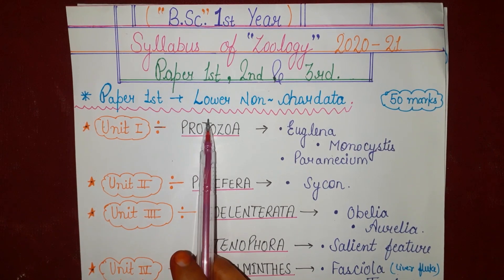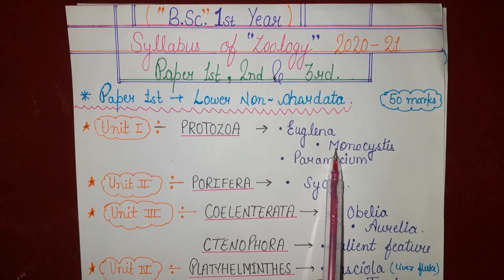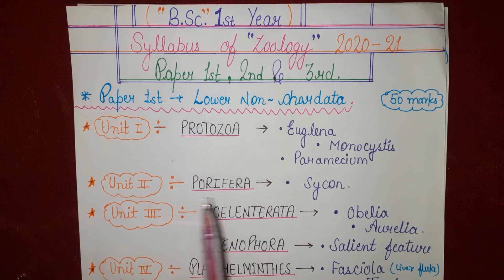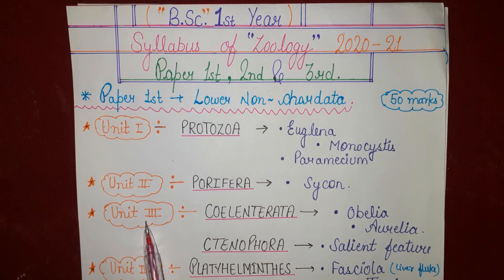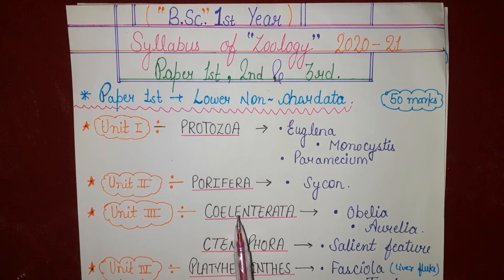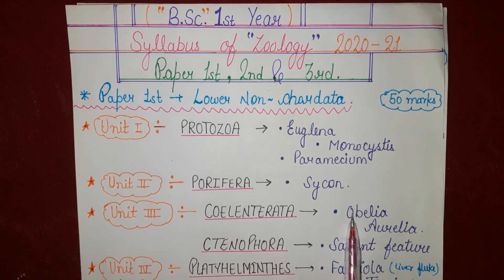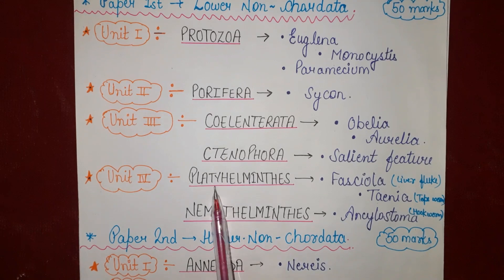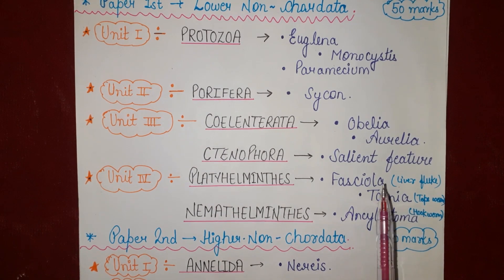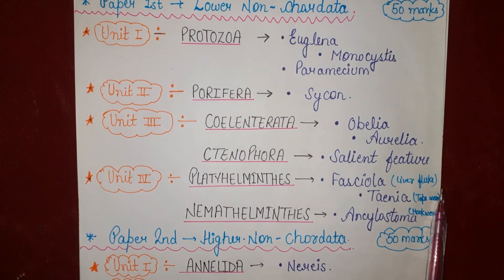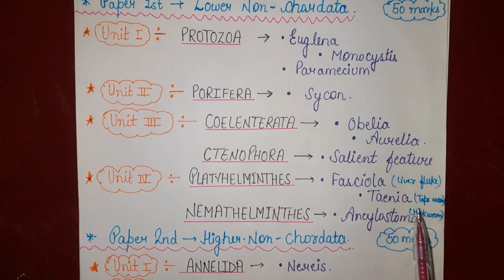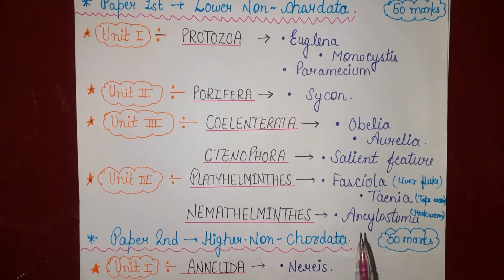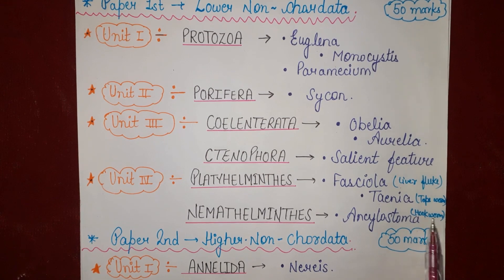Unit 1 is Protozoa, in which we study about Euglena, Monocystis, and Paramecium. Unit 2 is Porifera, in which we study about Sycon. Unit 3 is Coelentrata and Ctenophora — in Coelentrata, we study about Obelia and Aurelia. Unit 4 is Platyhelminthes, in which we study about Fasciola hepatica (also known as liver fluke) and Taenia solium (also known as tapeworm), along with Nemathelminthes and Glyostomata, also known as hookworm.